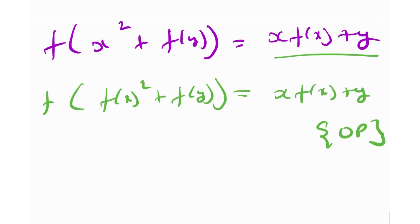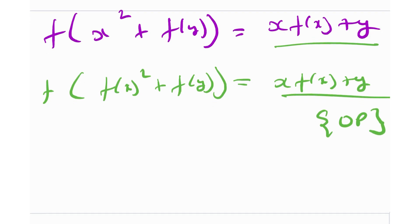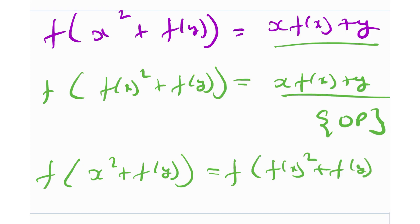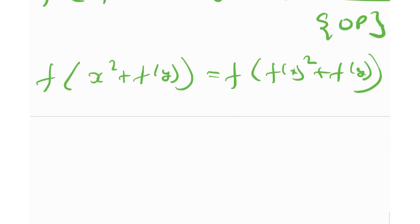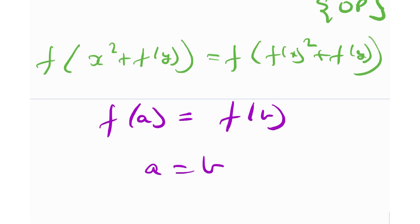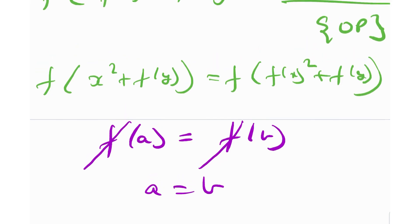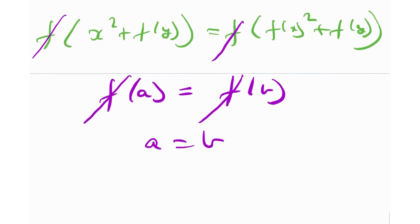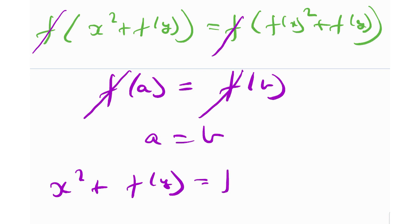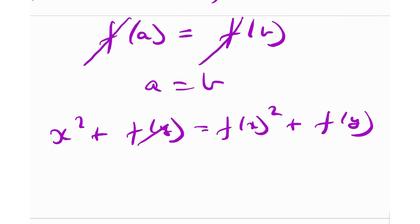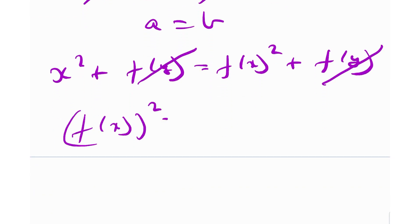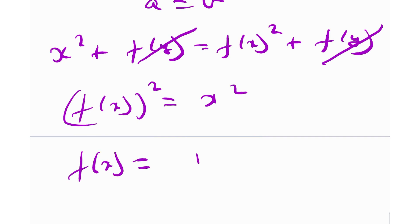From the original problem, f(f(x)² + f(y)) = x·f(x) + y. Equating, f(x² + f(y)) = f(f(x)² + f(y)). Since f is injective, we can cancel the outer f: x² + f(y) = f(x)² + f(y). Subtracting f(y) from both sides gives f(x)² = x². Therefore f(x) = ±x.